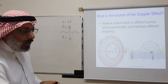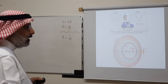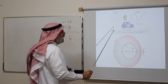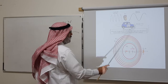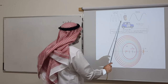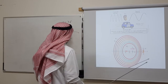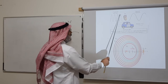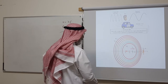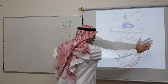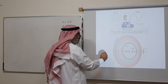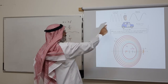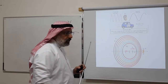Both cases are illustrated together. When the source moves toward the detector, the wavelength decreases, so frequency increases. When the source moves away, the wavefronts spread out — the wavelength increases and frequency decreases, as you can see in the diagram.